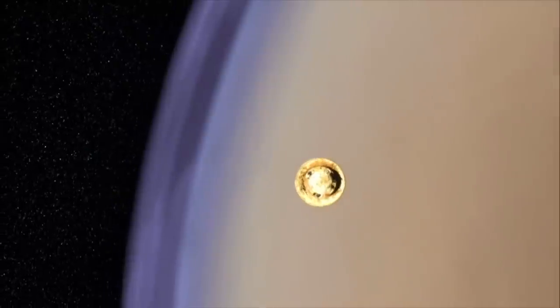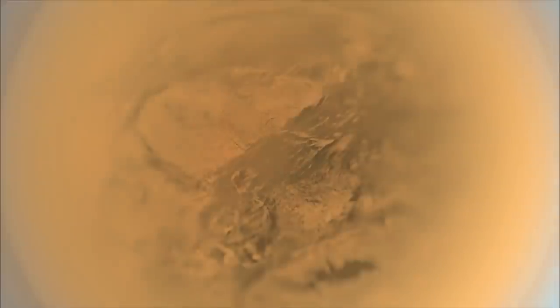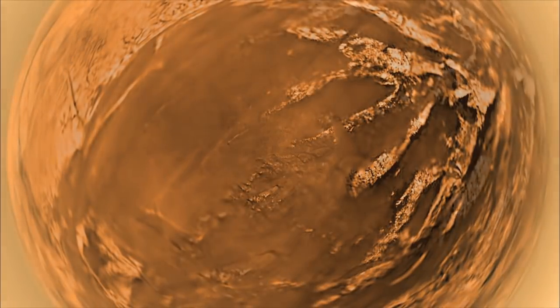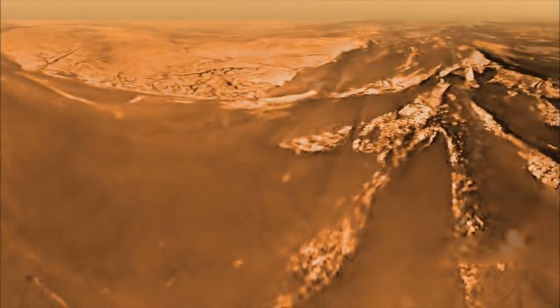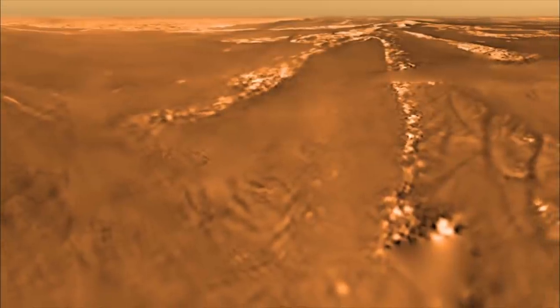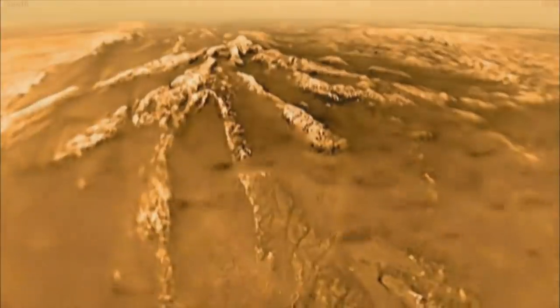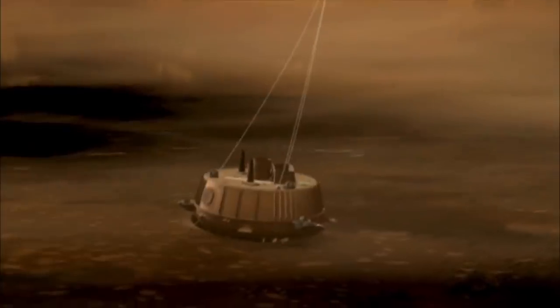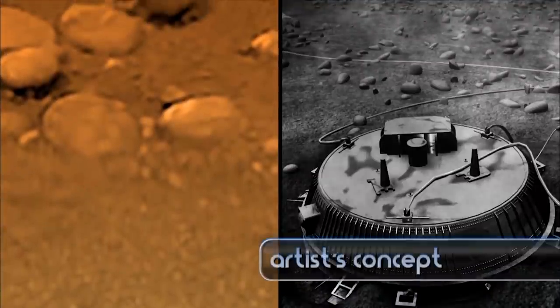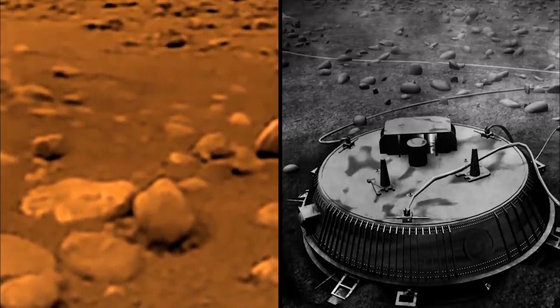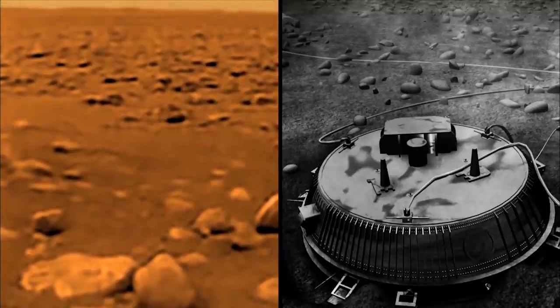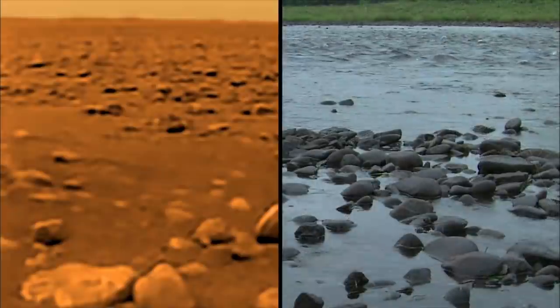When Cassini dropped a probe into Titan's cloudy atmosphere, the probe deployed its parachute and slowly descended, radioing pictures back to Cassini. As soon as the probe emerged from the clouds, it began to see exciting details that looked suspiciously like they had been carved by a flowing liquid. Then, to everyone's surprise, the probe survived its impact and sent back one final spectacular image showing chunks of ice clearly rounded by fluid flow like rocks in a stream bed on Earth.